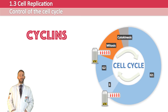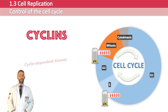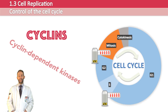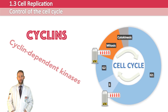Different cyclins control when each stage of the cell cycle occurs. They do this by binding to enzymes called cyclin-dependent kinases. These then become active and cause phosphate groups to attach to other proteins. These proteins then become active themselves and carry out tasks specific to one of the phases of the cell cycle.